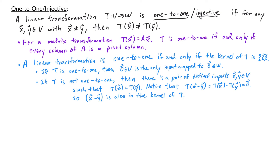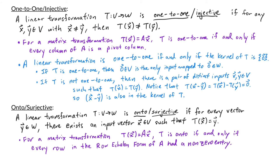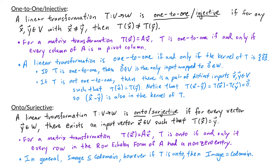Let's talk about onto, or surjective. We say that a linear transformation T from V to W is onto or surjective if for every vector y in your codomain, there exists an input vector x in your domain such that T of x equals y. This means everything in your codomain has some input vector mapping to it. For matrix transformations, to determine if the transformation was onto, we row reduce A. If every row had a non-zero entry in row echelon form, the transformation is onto; if it had a row of zeros at the bottom, the transformation was not onto. In general, the image of a transformation is a subset of the codomain, but if the transformation is onto or surjective, then these two quantities are equal — the image equals the codomain.